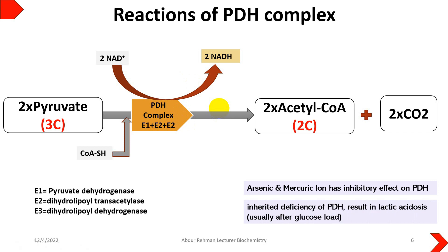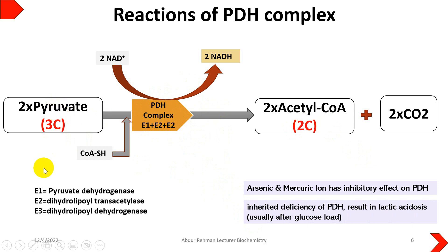If there is an inherited deficiency of this pyruvate dehydrogenase complex, the conversion of pyruvate to acetyl-CoA may not happen. This results in pyruvate being shunted into another pathway, leading to lactic acid accumulation.